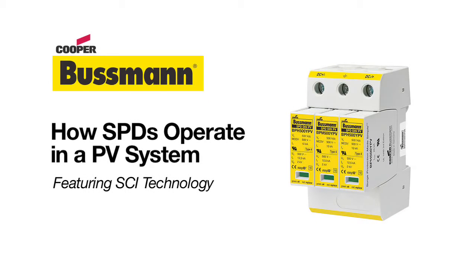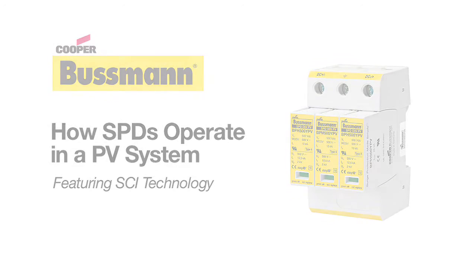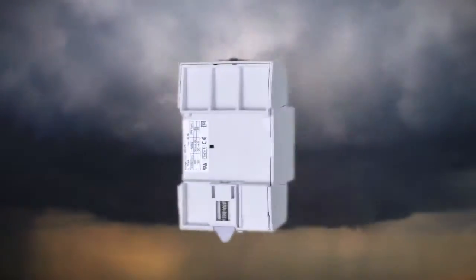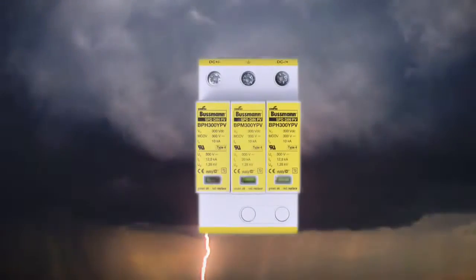This video explains how PV surge protective devices operate using SCI technology. The Cooper Busman surge protected device can help in reduction of equipment damage due to over-voltage events such as lightning strikes.